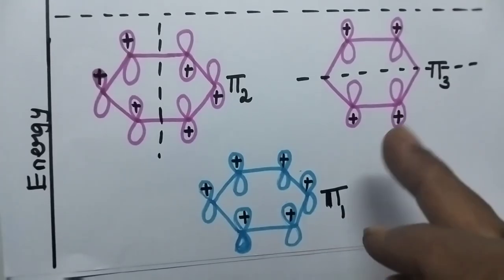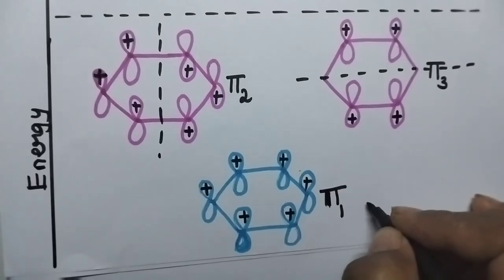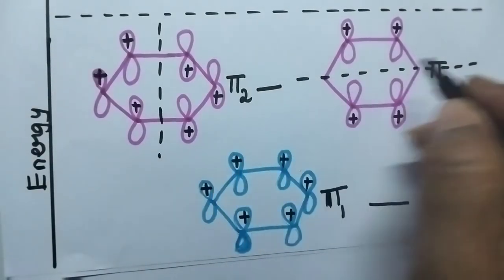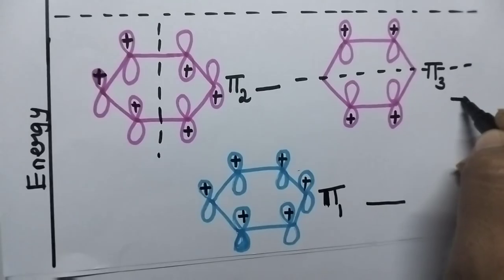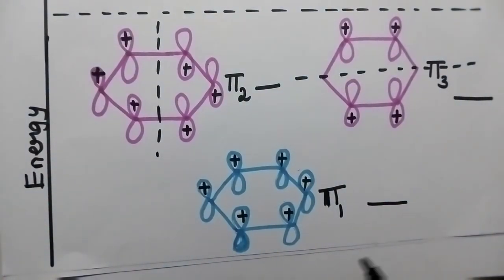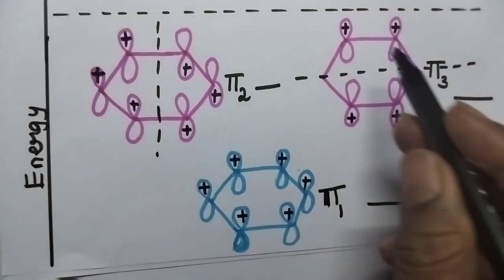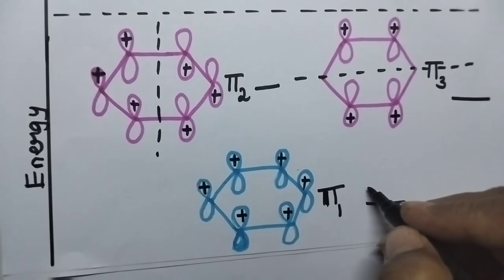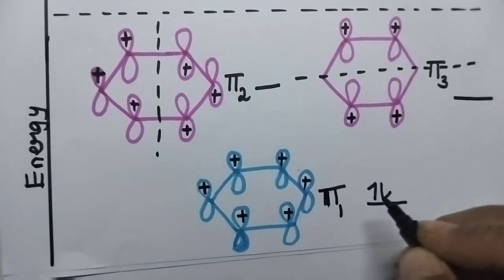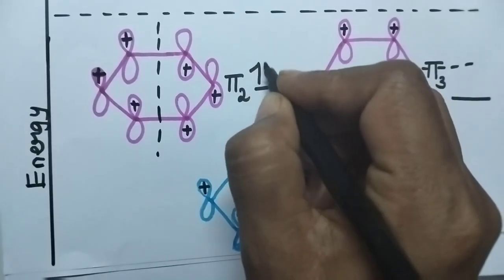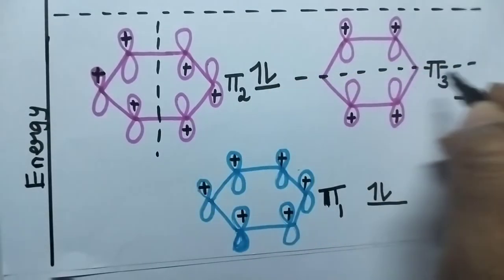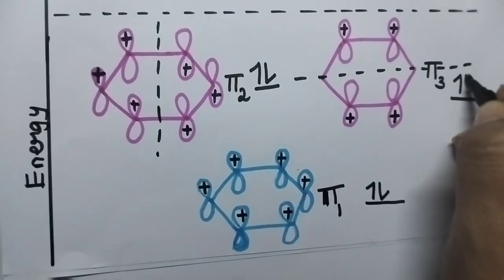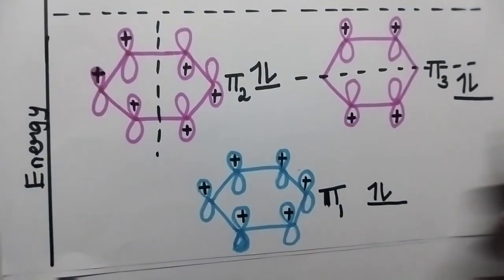6 p orbitals contribute to the pi system formation, giving 6 electrons. Coming to the filling of the molecular orbitals, we have to follow the Aufbau and Hund's principle. 6 electrons are present and hence these 3 molecular orbitals are filled. Pi 1 molecular orbital has 2 electrons, pi 2 molecular orbital has 2 electrons, and pi 3 also has 2 electrons. Pi 1, pi 2, and pi 3 are the bonding molecular orbitals.